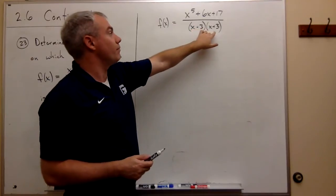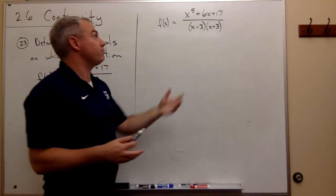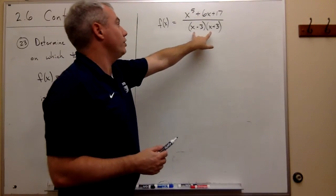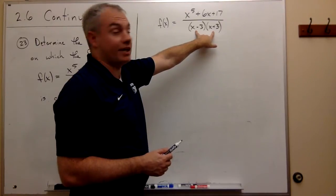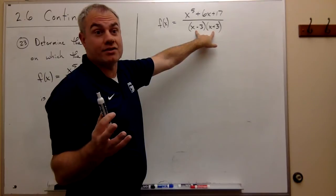So at x equals 3 and minus 3, I have discontinuities. Everywhere else, I can just plug in the value and everything is fine. So all we have to look at is we have two discontinuities on this graph at 3 and minus 3. So now all we have to do is say, well, everything else is continuous.